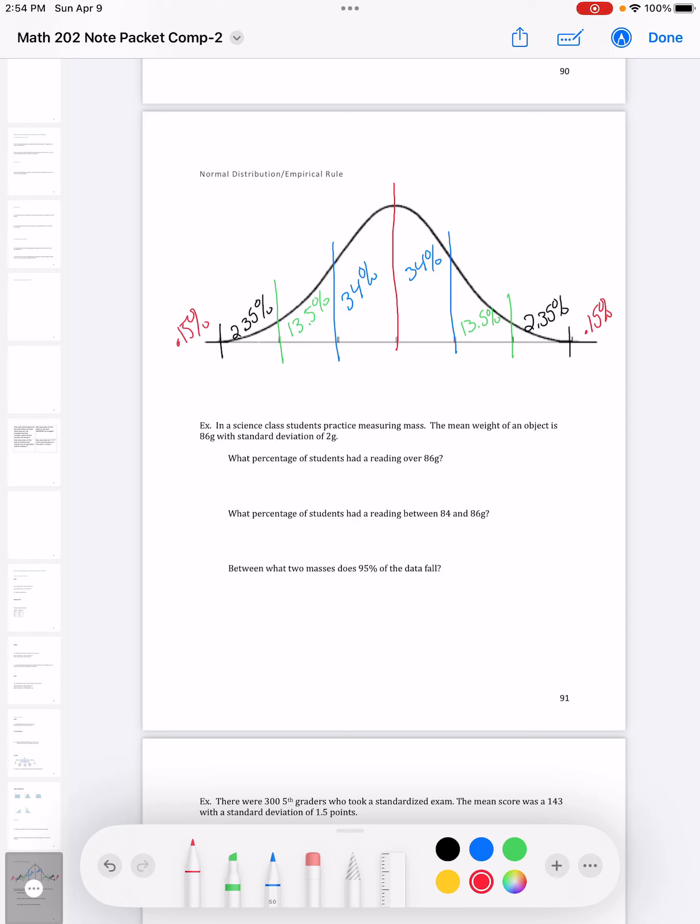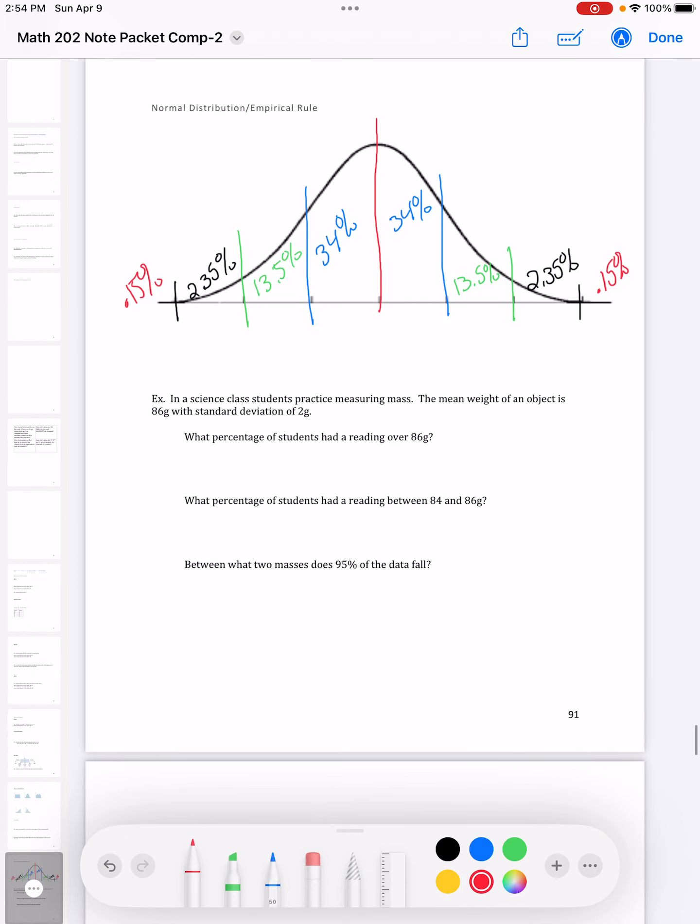Now let's see how this empirical rule applies to some problems. In these problems, we're going to see that we are given the mean and the standard deviation. These numbers were given to me. So I'm going to plug those in up top. I'm going to start with the mean, and then I'm going to count by whatever the standard deviation was. So in this problem, I'm going to count by twos.